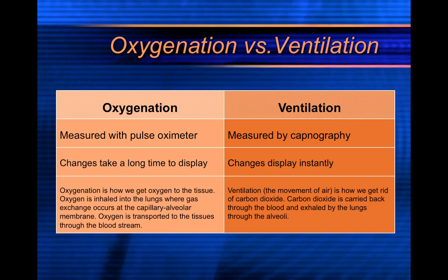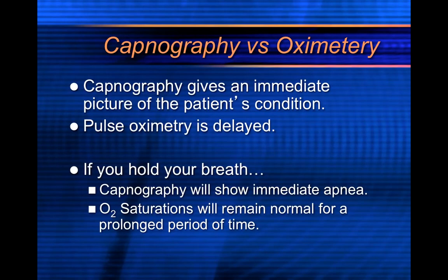One thing you can try to show the difference between the two: put a pulse oximeter on your finger and at the same time put on a capnography device — they make a nasal cannula-like device with nasal prongs that will take your capnography value. Now hold your breath and you'll notice on your capnogram it will immediately flatline. It's like the equivalent on an EKG to asystole. Your pulse oximetry values will stay within a normal range for a prolonged period of time.